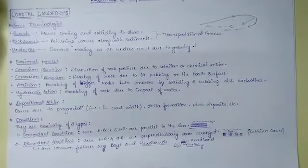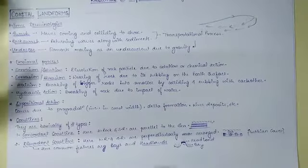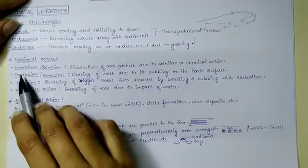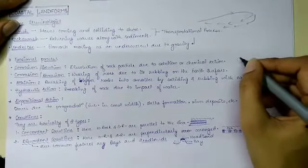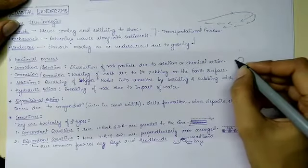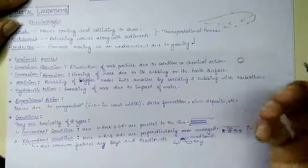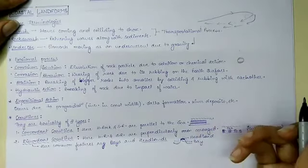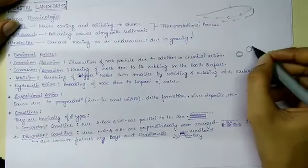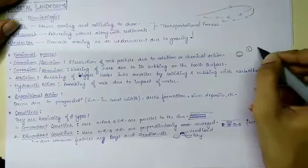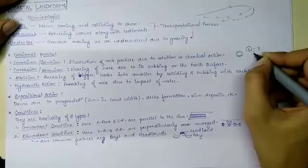In coastal landforms we will study erosional landforms as well as depositional landforms. The first erosional process is corrosion, also known as solution. In it, the rock particle is degraded because of dissolution — either because of a solution or chemical action. For example, if particle X is soluble in Y, when it comes in contact with Y it will dissolve and get eroded away.